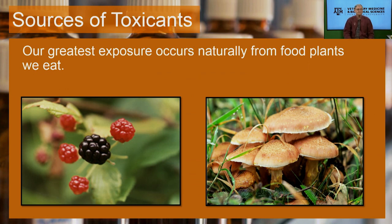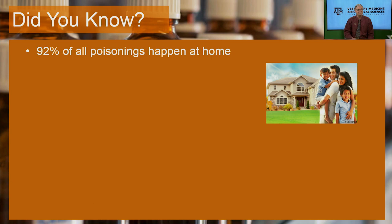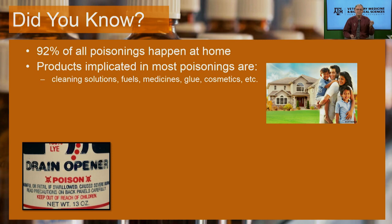Our greatest exposure is from the food that we eat, the plant food. Sometimes inadvertently you might get the wrong mushroom or the wrong berry. Did you know that 92 percent of all poisonings happen at home, where kids should be safe? The products which may be the problem are cleaning solutions, fuels, medicines, glue, and cosmetics — right in the reach of children. Usually two or three years old is the greatest exposure age group.